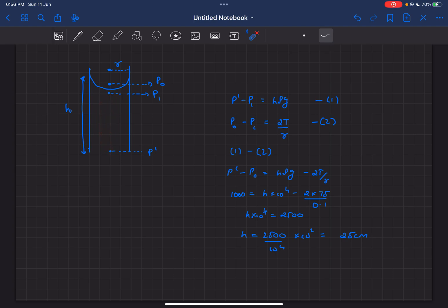We can write p dash minus p1 as h rho g. Now we can write the excess pressure, which is 2t by r, as p0 minus p1. As the meniscus is shaped like this, the pressure above is greater than the pressure below, so p0 minus p1 equals 2t by r.